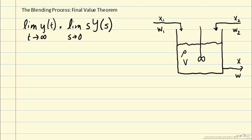Let's apply this method to the blending process, which is shown in the figure. We have two streams that flow into a well-mixed tank with one outlet stream leaving. And we're most interested in controlling the mass fraction x leaving the tank.